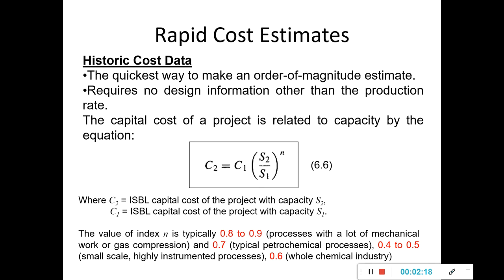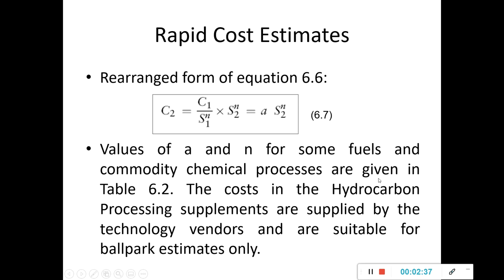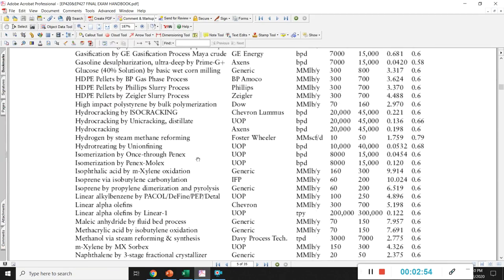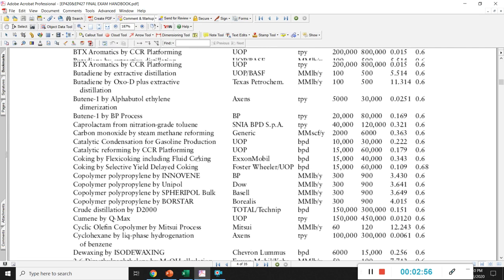The values of the index n are: 0.8 to 0.9 for processes with a lot of mechanical work such as gas compressions; 0.7 for typical petrochemical processes; 0.4 to 0.5 for small scale and highly instrumented processes; and 0.6 for the whole chemical industry. We are referring to Table 6.2, where values of a and n for fuel and commodity chemical processes are given.